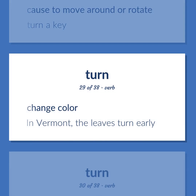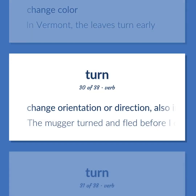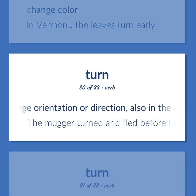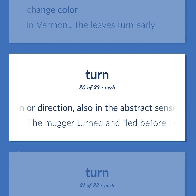To change color. Example: In Vermont, the leaves turn early. To change orientation or direction, also in the abstract sense.